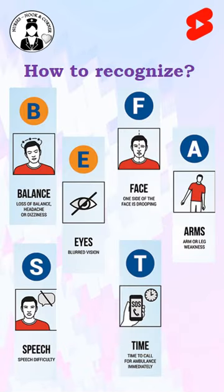B — check the balance, or patient complaints of headache or dizziness. E — for eyes, they have blurred vision. F — face, one side of the face droops. A — arm drift or leg weakness. S — speech, that is difficulty speaking. And T — time to call the ambulance.